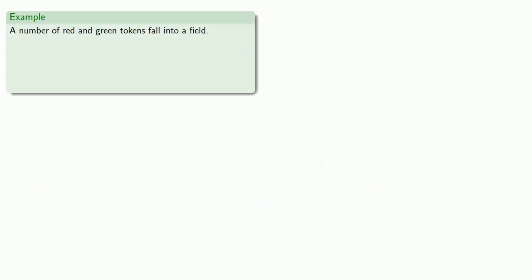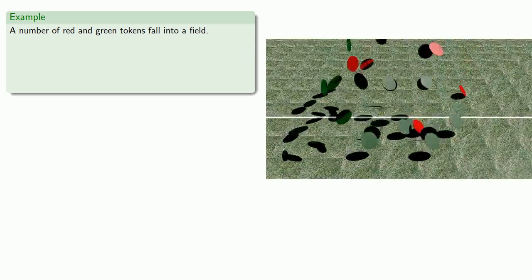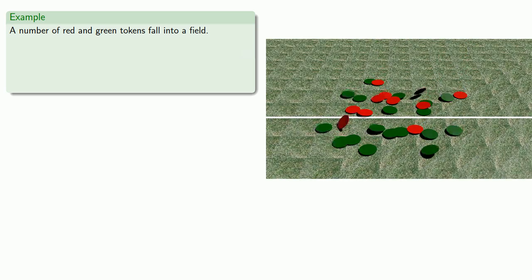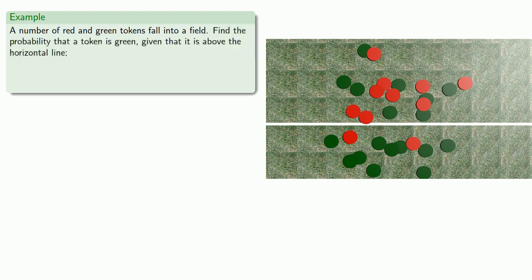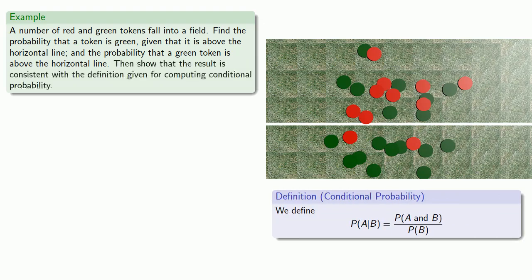For example, suppose we have a number of red and green tokens falling into a field. If we look at where these tokens fall, we might consider the following probabilities: the probability that a token is green given that it is above the horizontal line, and the probability that a green token is above the horizontal line. Now these are probabilities we could have found before, but now we have this nice computing formula. Let's show that the result is consistent with the definition for computing conditional probability.